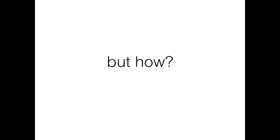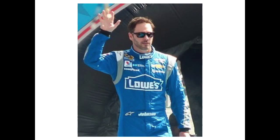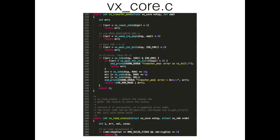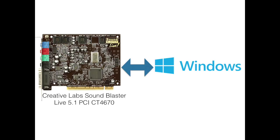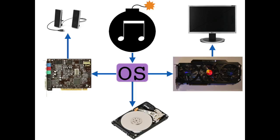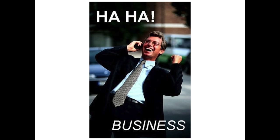Operating systems hide differences in computer parts by using a bunch of specialized computer programs called drivers. Each driver helps a specific computer part work with a specific operating system. The people who manufacture the computer parts are the ones who create the drivers for those parts. This way, an operating system can provide a predictable, unified environment for anyone developing new programs. BoomTune is back on track!